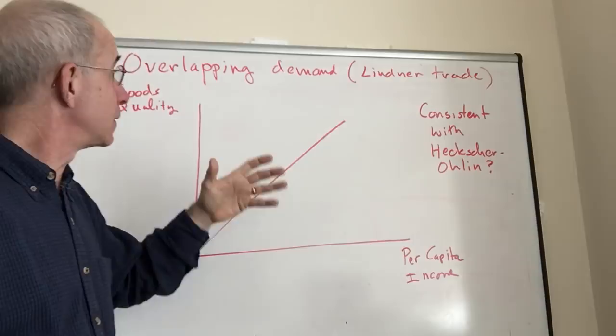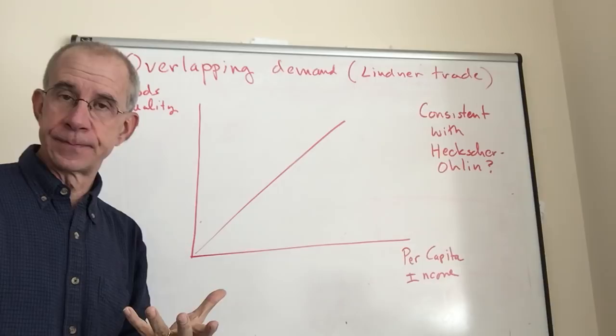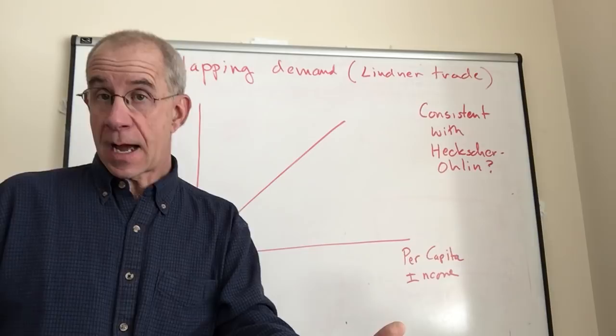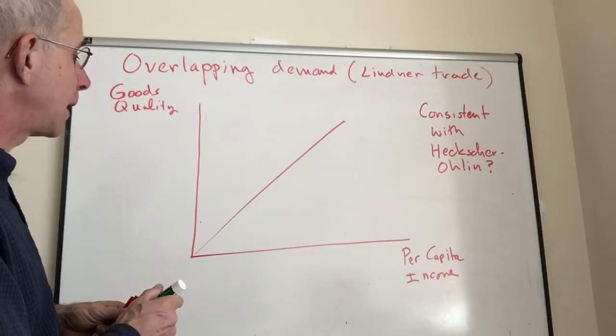It goes back to the early 1960s and emphasizes overlapping demand. In particular, it's based on the idea that the quality of goods produced in a country is going to be related to per capita income. If you've got high per capita income, you'll produce high quality goods. If you have low per capita income, you'll produce relatively low quality goods.